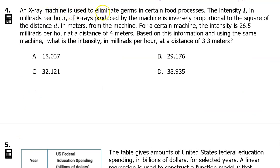Number 4. An x-ray machine is used to eliminate germs in certain food processes. The intensity i in millirads per hour of x-rays produced by the machine is inversely proportional to the square of the distance d in meters from the machine. For a certain machine, the intensity is 26.5 millirads per hour at a distance of 4 meters. Based on this information and using the same machine, what is the intensity in millirads per hour at a distance of 3.3 meters? First of all, if the intensity i is inversely proportional to the square of the distance, that means i is equal to k divided by the square of the distance, where k is a constant.